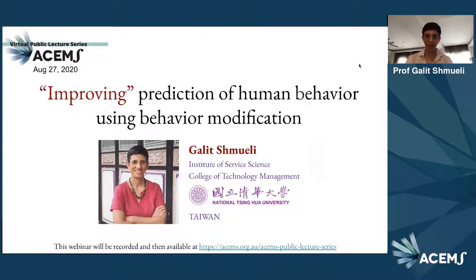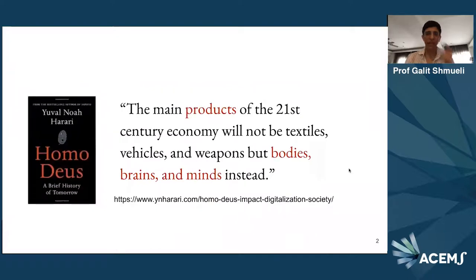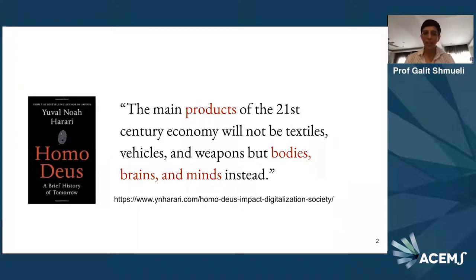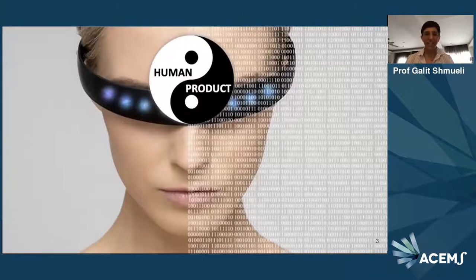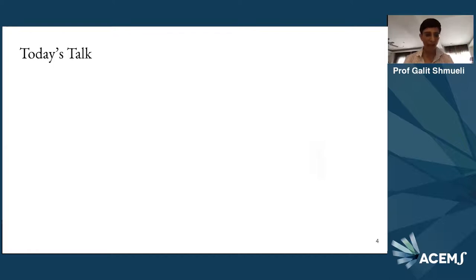What am I going to be talking about? The famous historian Yuval Noah Harari has written recently that the main products of the 21st century economy will not be textiles, vehicles and weapons, but rather bodies, brains and minds. In this new kind of economy where humans are really perceived as products or as data, a lot of new interesting things — some good and some bad — are arising, which as researchers we want to be able to represent, understand and analyze.